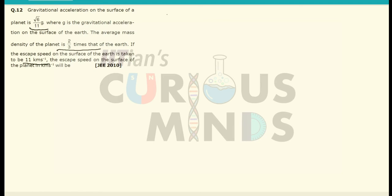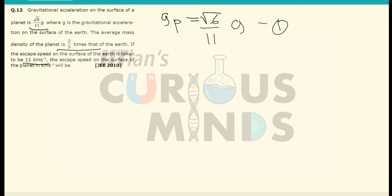Let us say the gravitational acceleration gp is equal to √6 by 11 times that of the earth. Let this be equation number 1. The density of the planet is equal to 2 by 3 times the density of the earth. Let this be the second equation.